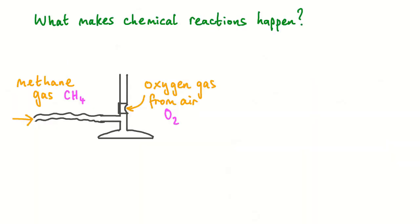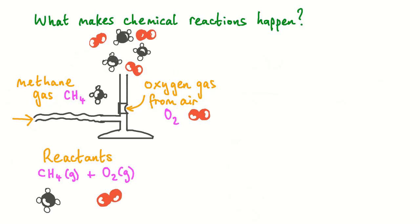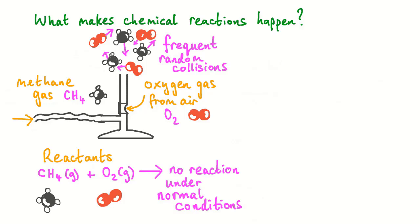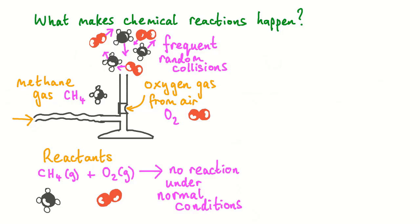Chemical reactions usually happen when reactant molecules are mixed together and collide with each other. For example, we could mix methane gas with oxygen gas. The methane and oxygen gas particles move around freely and the molecules will collide with each other frequently, but a chemical reaction does not occur under normal conditions.